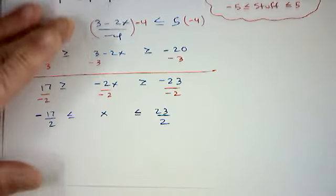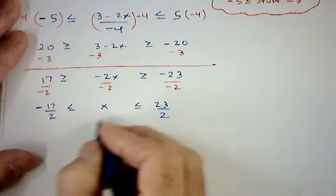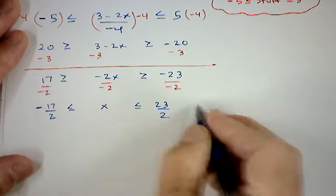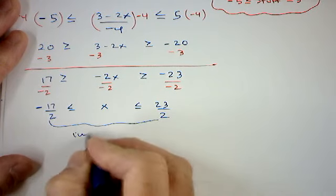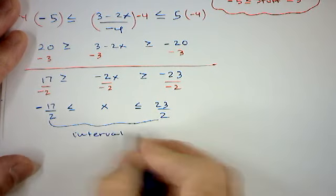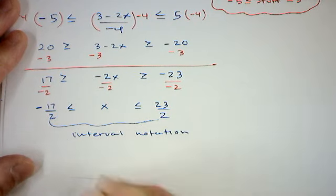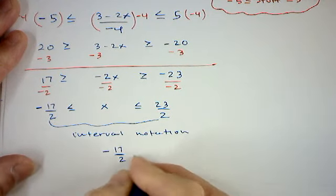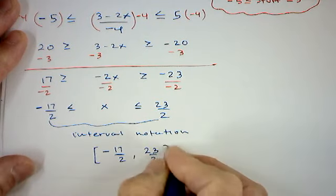This solution can be written as a compound inequality or in interval notation as [−17/2, 23/2], including both endpoints.